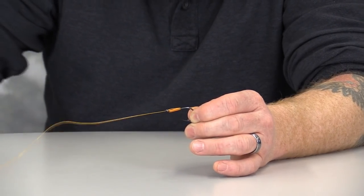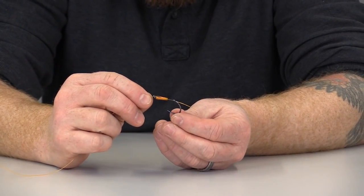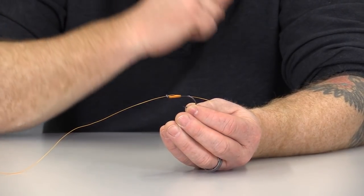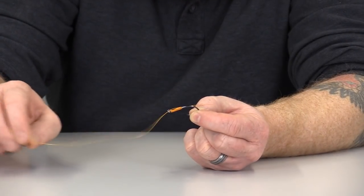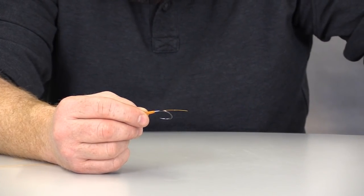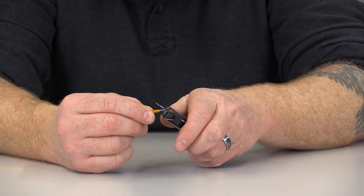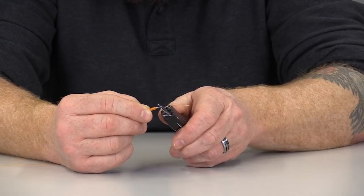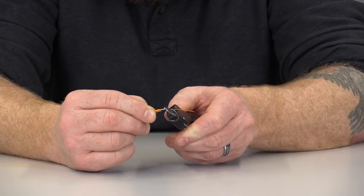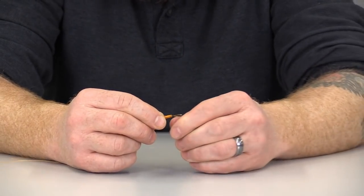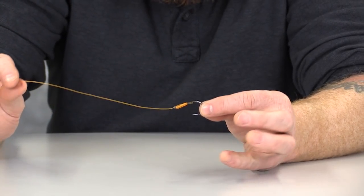What you want to end up with here is a knot that looks like this. Once we have this tightened down, I can take my scissors, I can come over here and I can clip this section away and I'm ready to fish. And that's the egg loop knot.